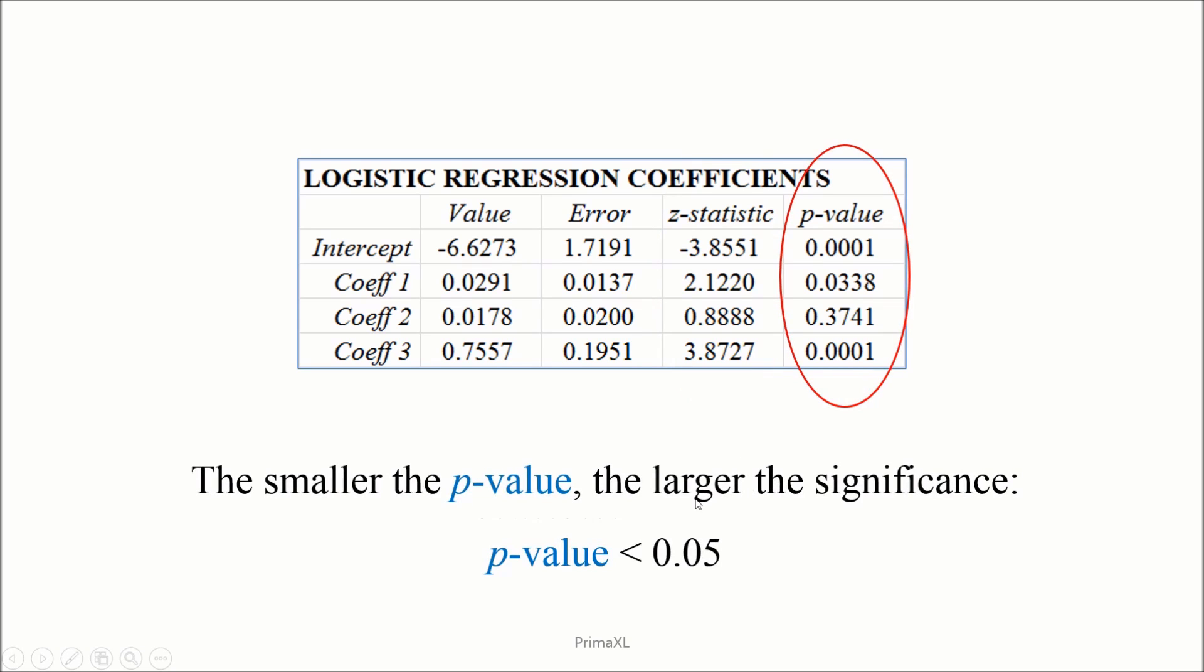The p-value is such that the smaller it is, the more statistically significant the coefficient is. Usually, when the p-value is smaller than 0.05, we say that the corresponding coefficient is statistically significant. Here, we can say that all the coefficients are significant except for the second one, or beta 2.